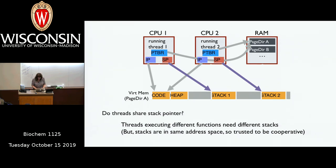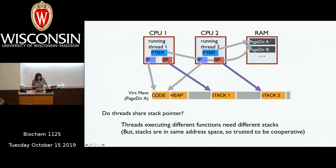Each thread that's part of the same process has the same address space — the same view of virtual memory, the same code, the same heap. Registers are virtualized, so each thread thinks it has its own copy of the integer registers, instruction pointer, and stack pointer. They each have different program counters and different stacks within the shared address space. Their page tables are shared — both point to the same page table in physical memory.